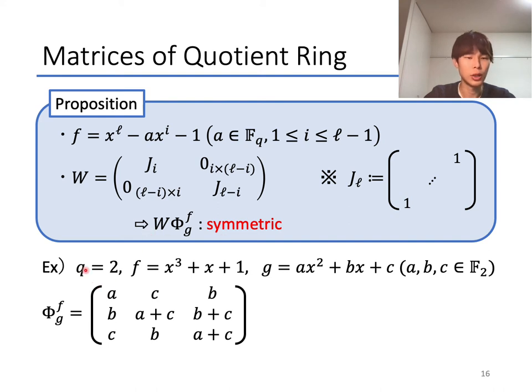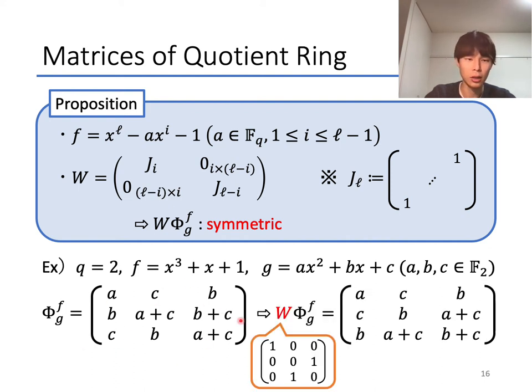Actually, if q equals 2 and f equals x^3 + x + 1, then for any element g equals ax^2 + bx + c, Φ_g^f is determined like this, and W·Φ_g^f becomes symmetric by using W, determined by this statement.